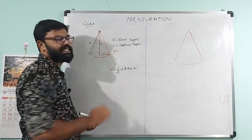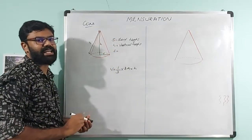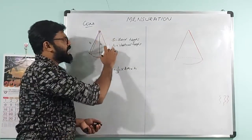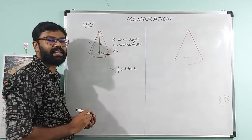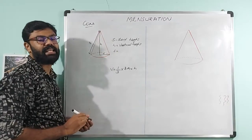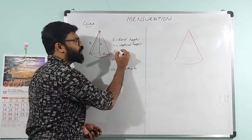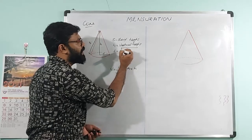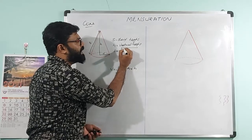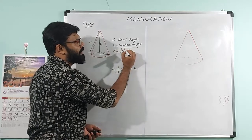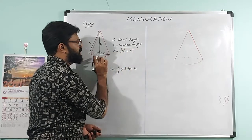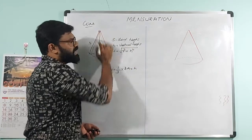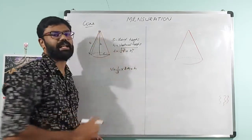We calculate using the right angle triangle. What is the slant height? It is the hypotenuse. Hypotenuse is equal to the root of base square plus height square. This is the base radius and this is the vertical height.